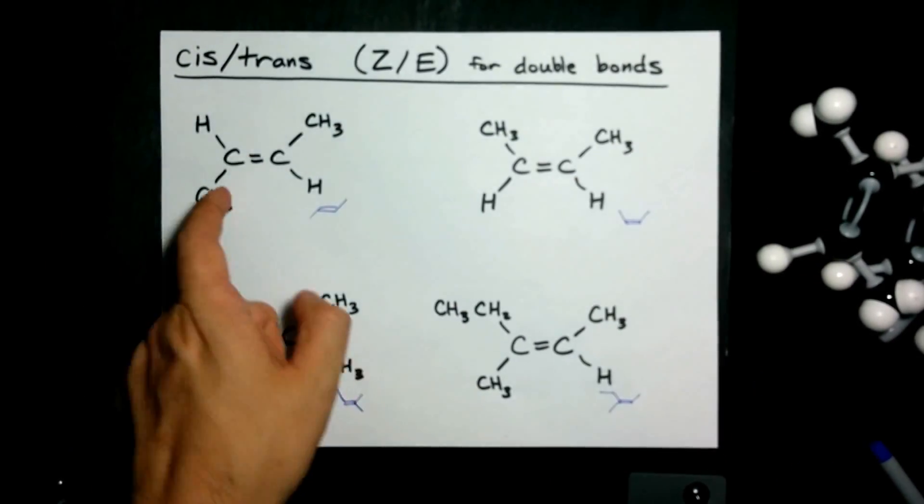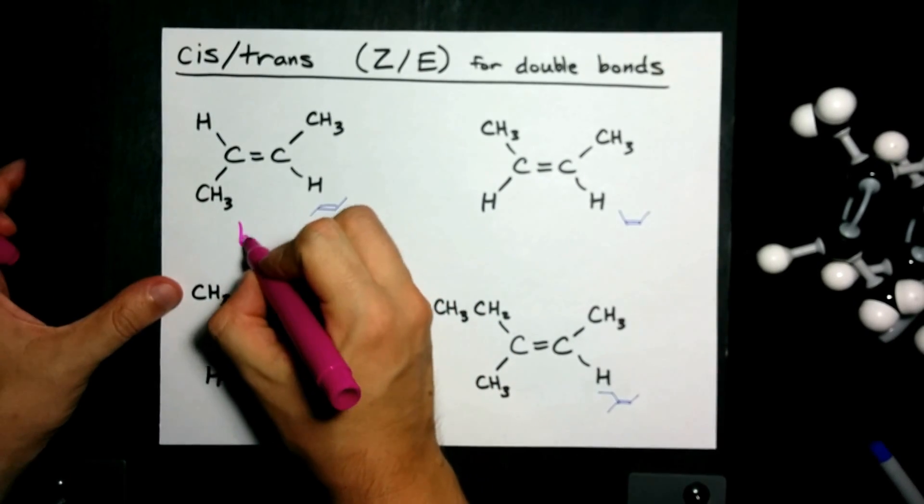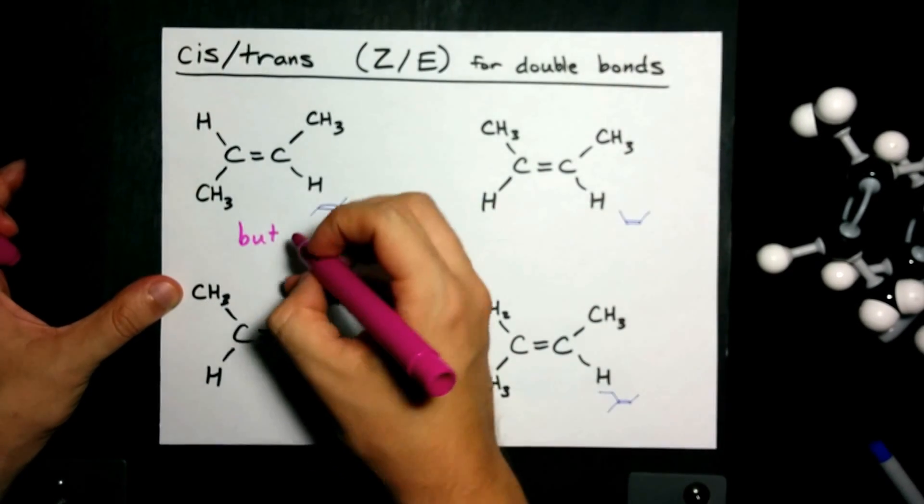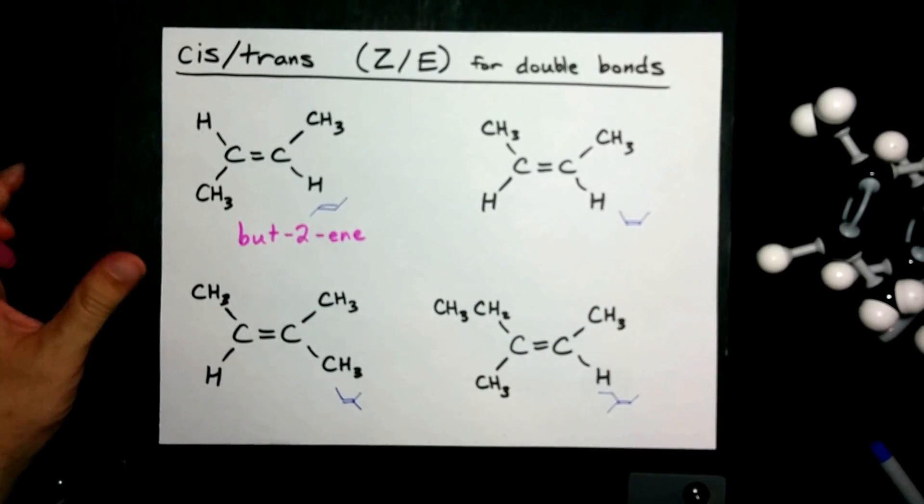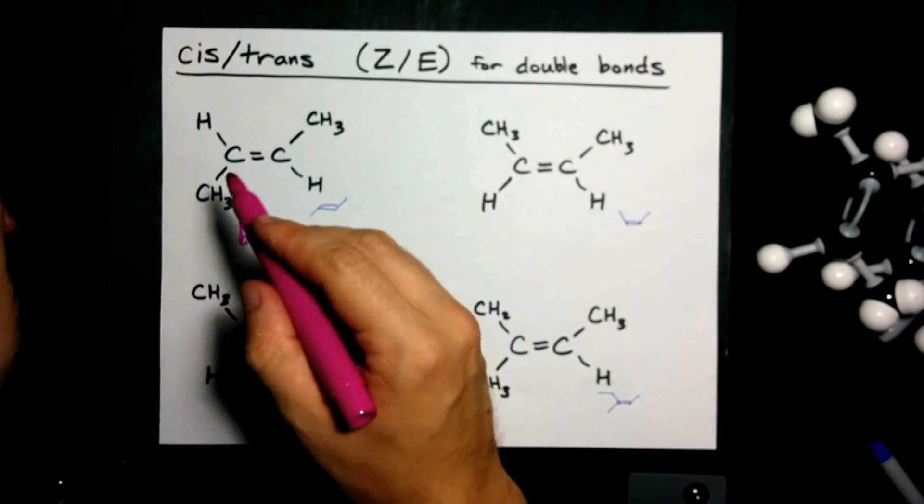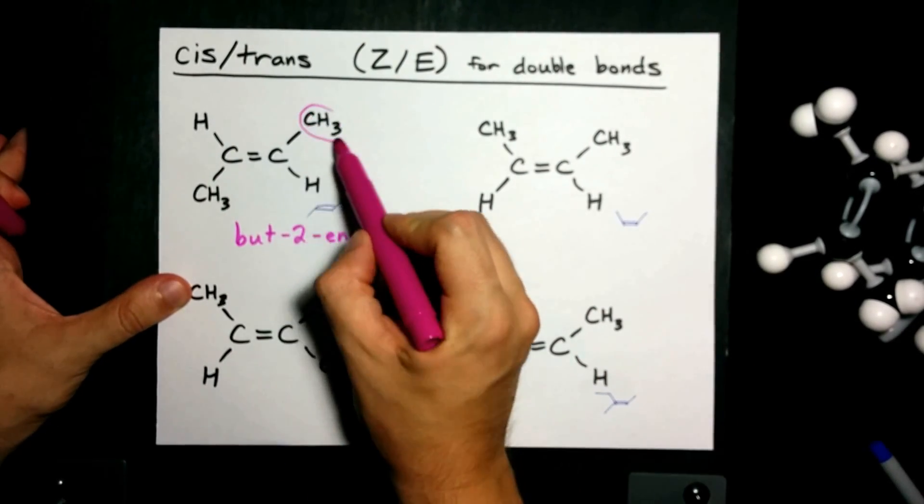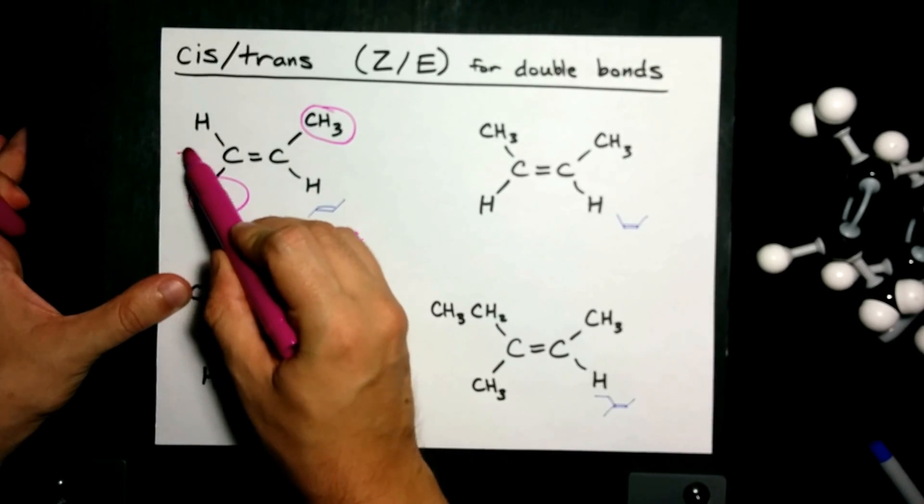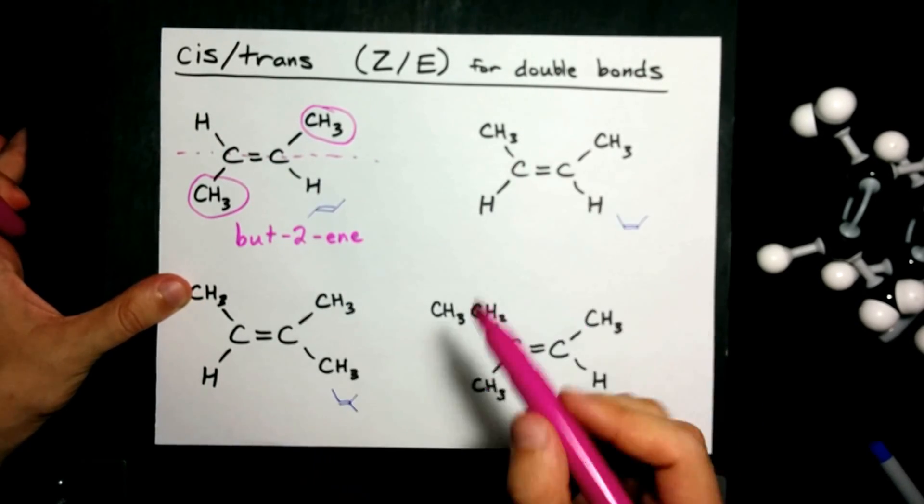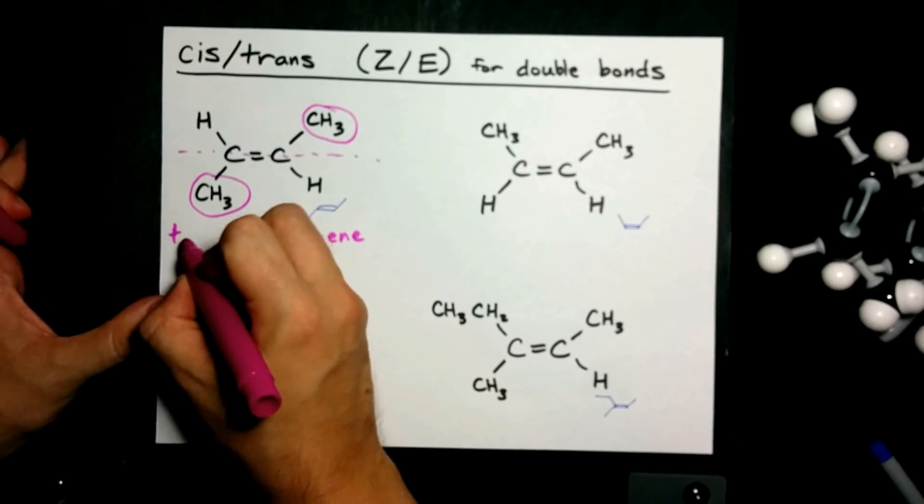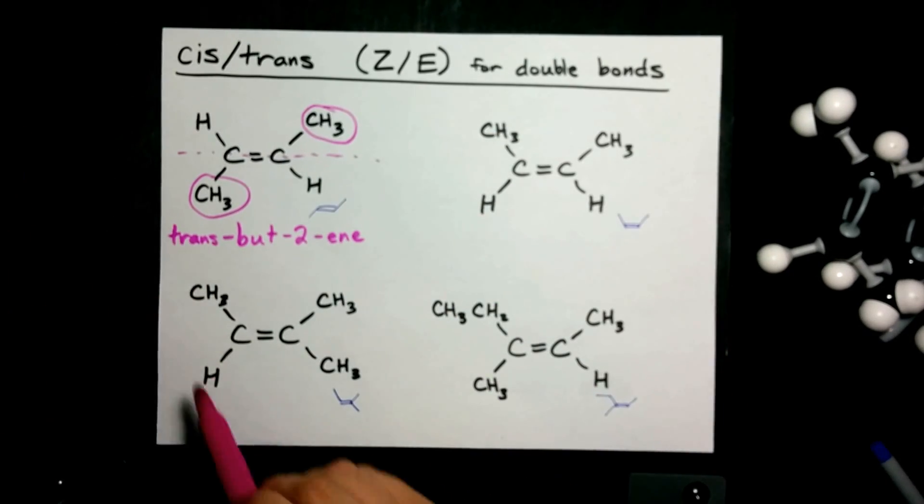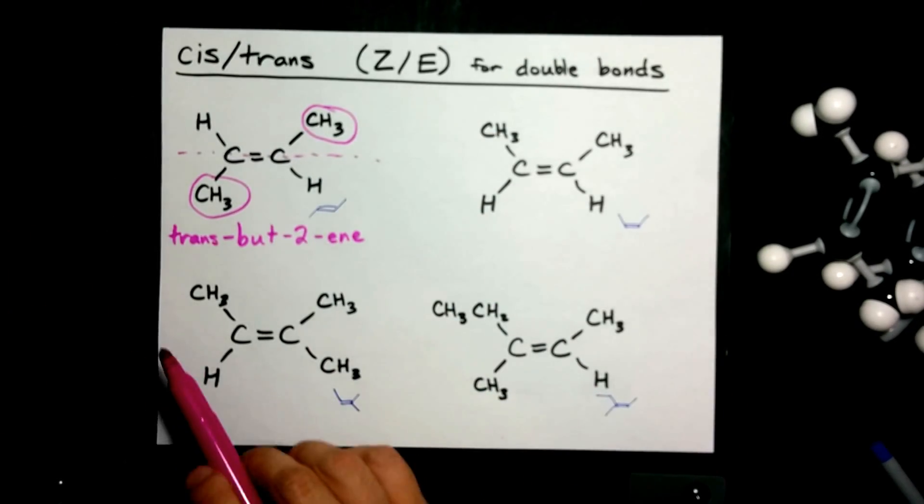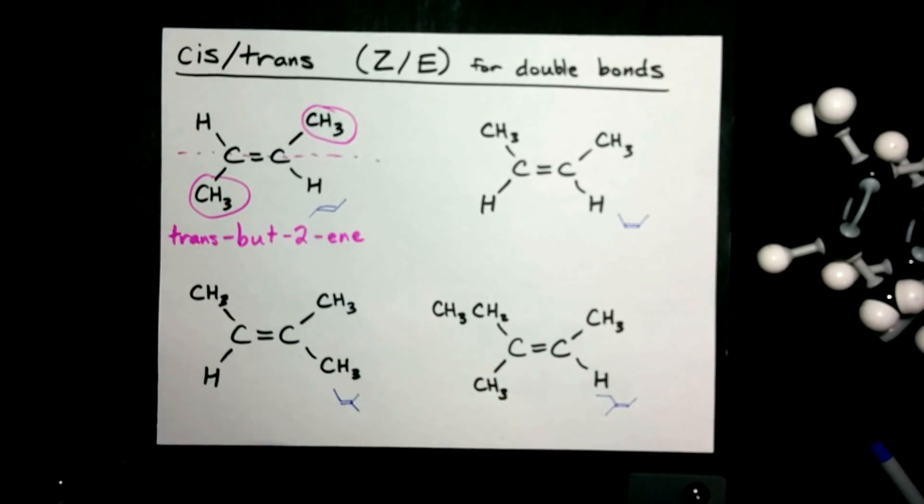Take a look. Here we have a four-carbon long chain, that makes it but, and a double bond at carbon number two, which makes it 2-ene. But the CH3 groups are on opposite sides of the plane of the double bond. So we preface the name with trans, and the official name for this molecule, one of them, is trans-but-2-ene.